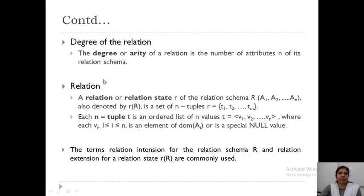The degree or arity of a relation is the number of attributes in its relation schema. So in a schema, how many attributes an entity type has — that number gives you the degree of the relation.